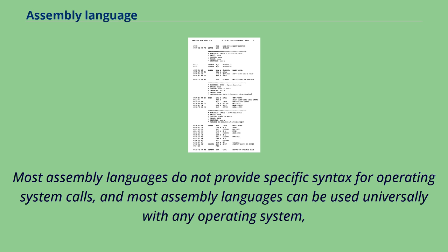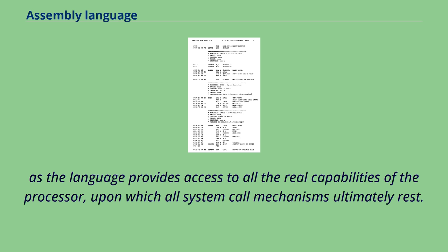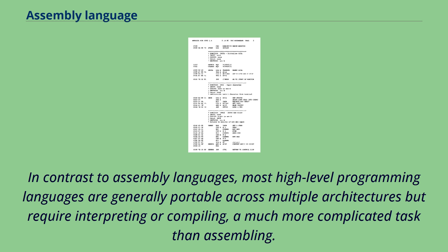Sometimes an assembler is specific to an operating system or to particular operating systems. Most assembly languages do not provide specific syntax for operating system calls, and most assembly languages can be used universally with any operating system, as the language provides access to all the real capabilities of the processor upon which all system call mechanisms ultimately rest. In contrast to assembly languages, most high-level programming languages are generally portable across multiple architectures but require interpreting or compiling, a much more complicated task than assembling.